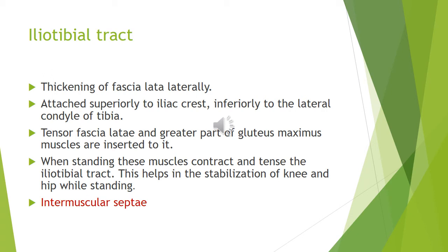The iliotibial tract is the thickened lateral portion of the fascia lata. Laterally, it is very thick, as you can see in the iliotibial tract. The iliotibial tract is superiorly attached to the iliac crest and inferiorly attached to the lateral condyle of the tibia. It splits to enclose the tensor fasciae latae muscle and also receives the insertion of the gluteus maximus muscle.